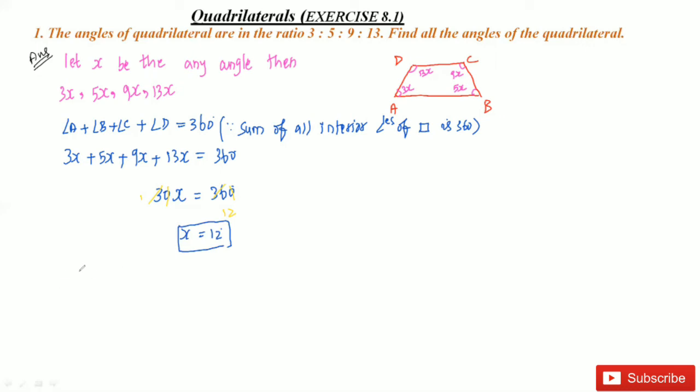But they asked to find the angles A, B, C, D. We need to find all angles. Angle A equals 3x, which is 3 times 12, which equals 36 degrees. Angle B is 5 times 12, which we know is 60 degrees.